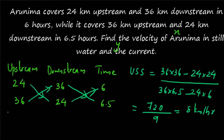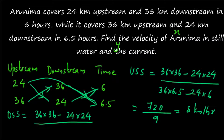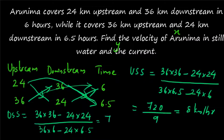Downstream speed has the same numerator: 36 × 36 − 24 × 24 = 720. For the denominator, take the cross products of upstream distance and time: 36 × 6 − 24 × 6.5 = 216 − 156 = 60. So downstream speed = 720 ÷ 60 = 12 km/h.